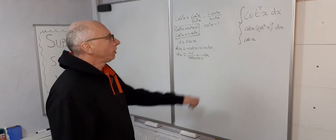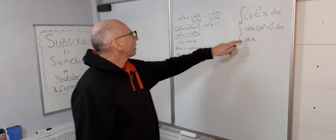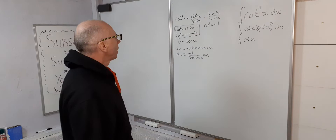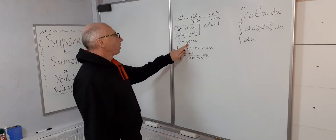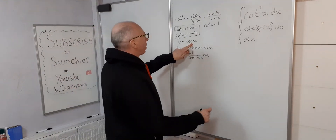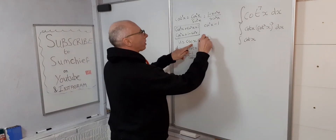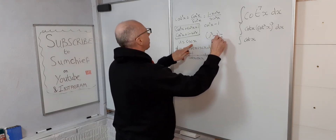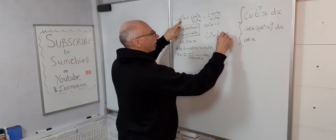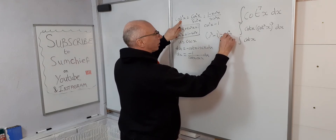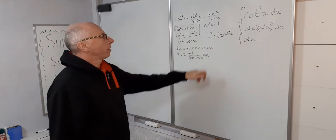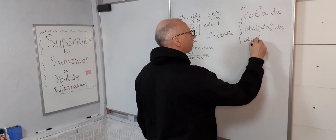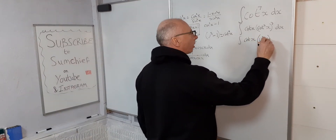Since cot²(x) = csc²(x) - 1 and u = csc(x), we can say u² - 1 = cot²(x). So now we can plug that in and go into the u-world: (u² - 1)³ for the cot³(x) part.